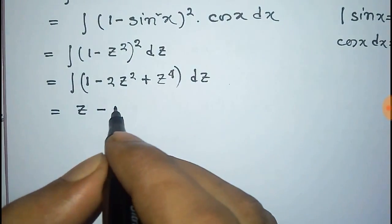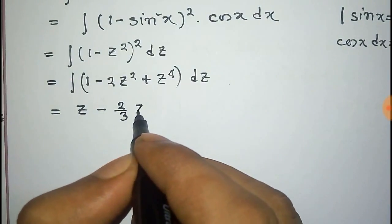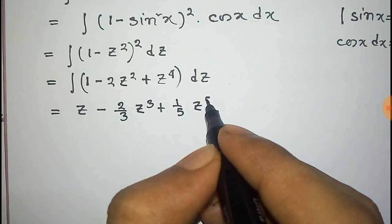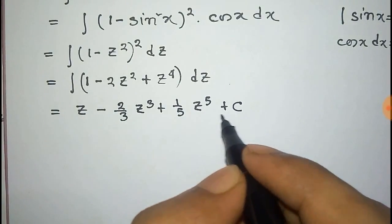Now we can integrate this it will be z minus 2 by 3z cube and the integration of z to the power 4 is z to the power 5 by 5 plus the constant c.